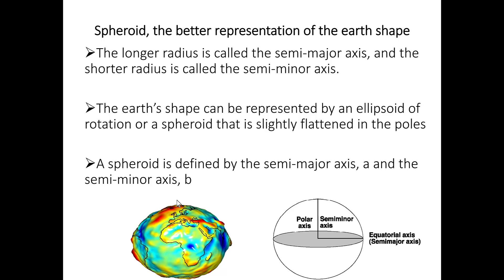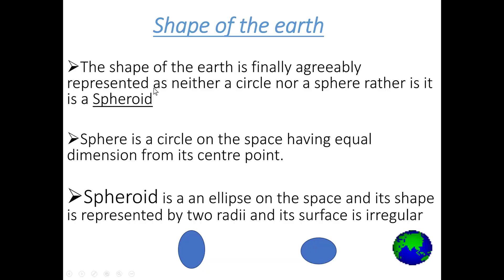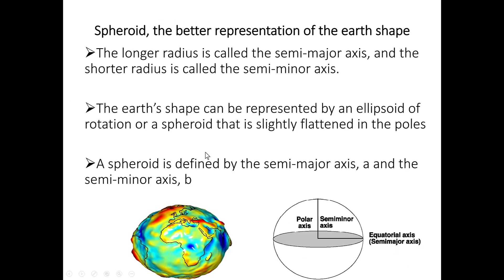The long radius is called the semi-major axis. The short radius is called the semi-minor axis. So, the spheroid is defined by a semi-major axis and the semi-minor axis.